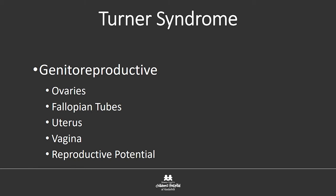Moving on to the genitoreproductive area — I am more of the structural anatomic person. I'm not an endocrinologist and I'm not an infertility specialist, so we'll touch on some of that and I may defer on specifics. We'll go over the general things as they relate to ovaries, fallopian tubes, uterus, vagina, and reproductive potential.